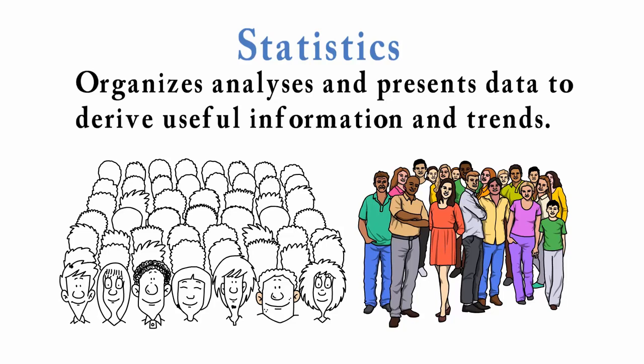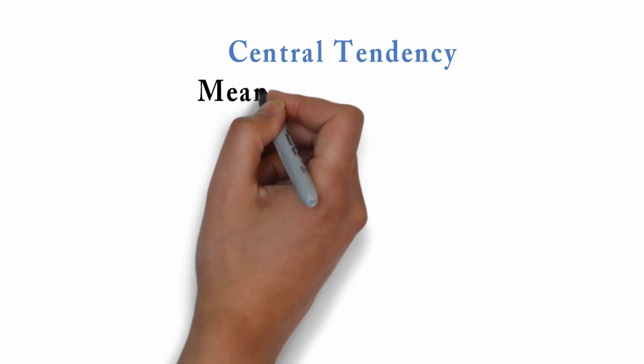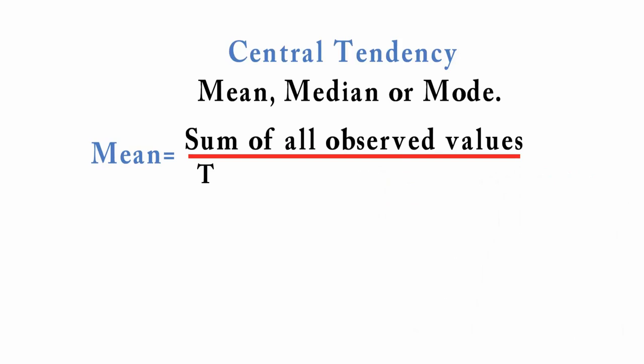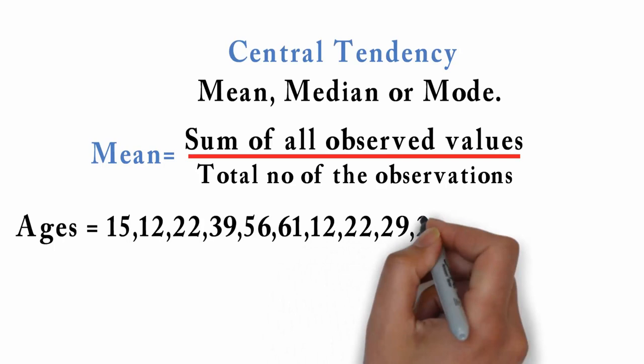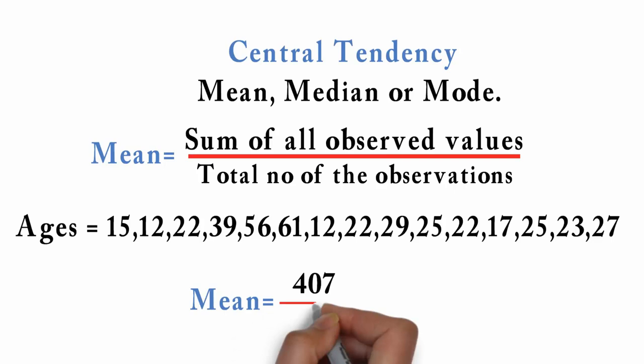To measure central tendency, we use one of three averages: mean, median or mode. Mean refers to the sum of all observed values divided by the total number of observations. For example, if we are measuring the ages of 15 patients visiting a dispensary, the sum of the observations is 407 divided by 15, giving you a mean of 27 years.